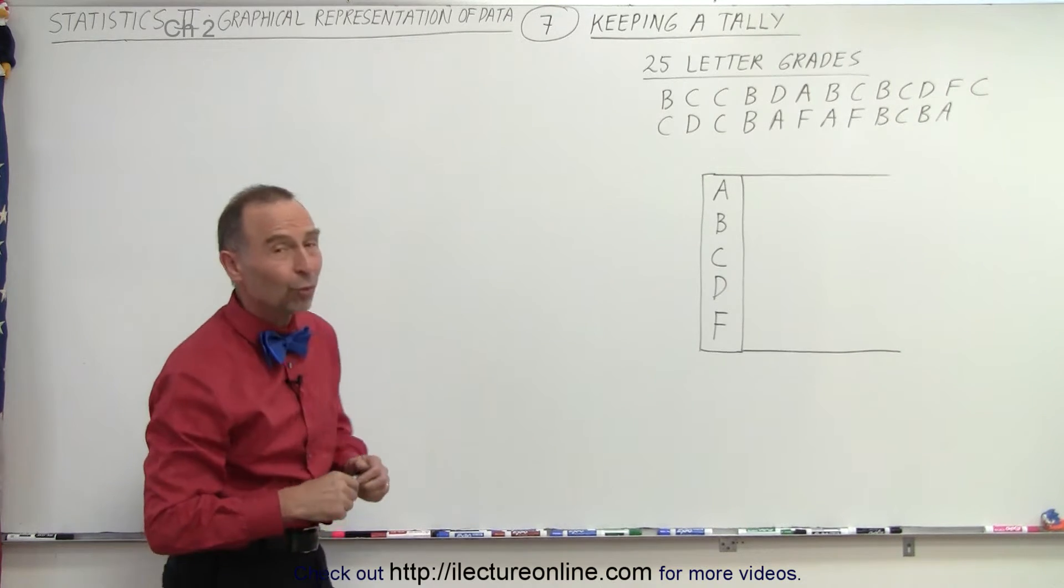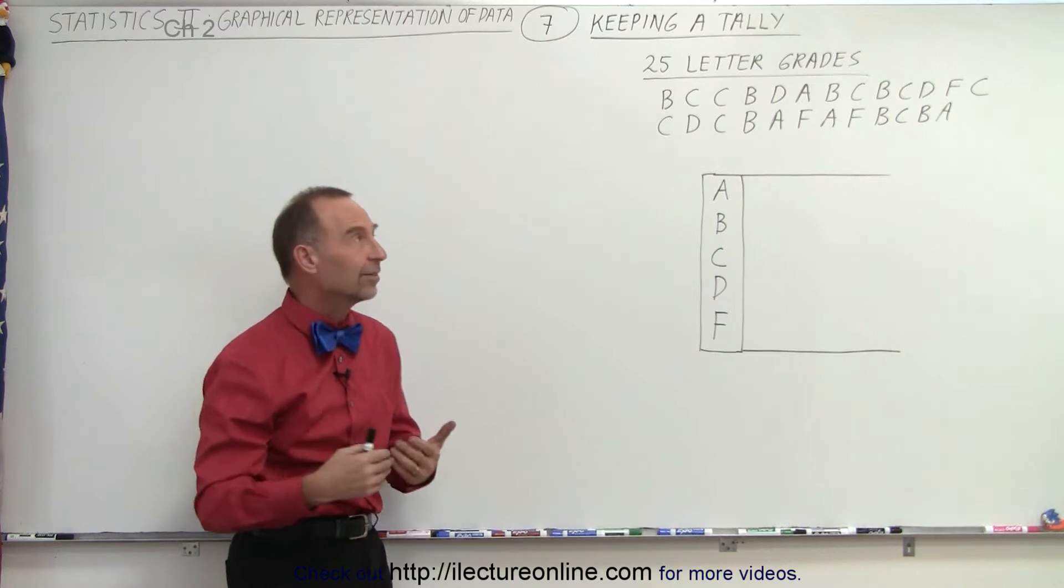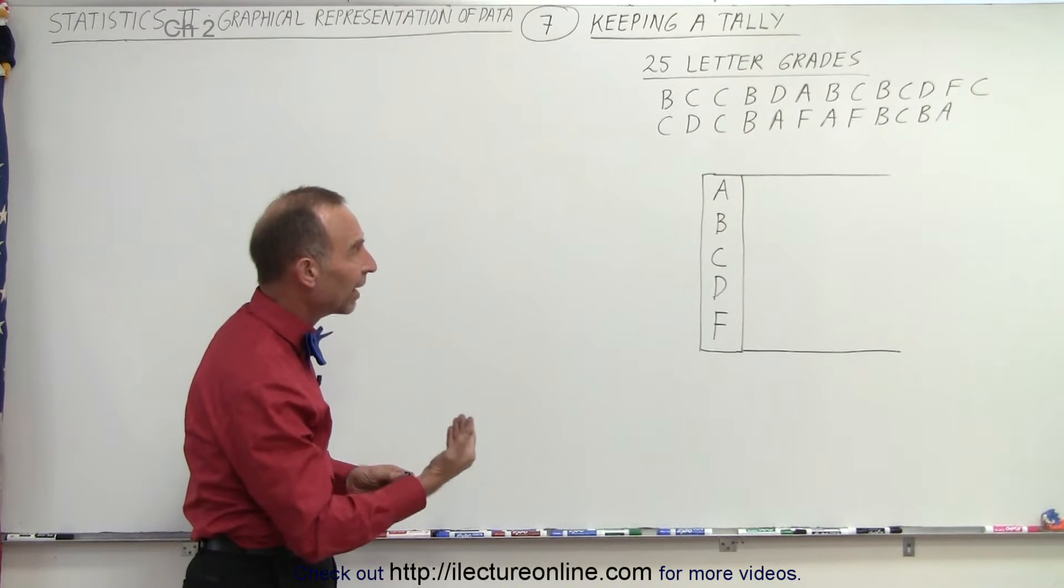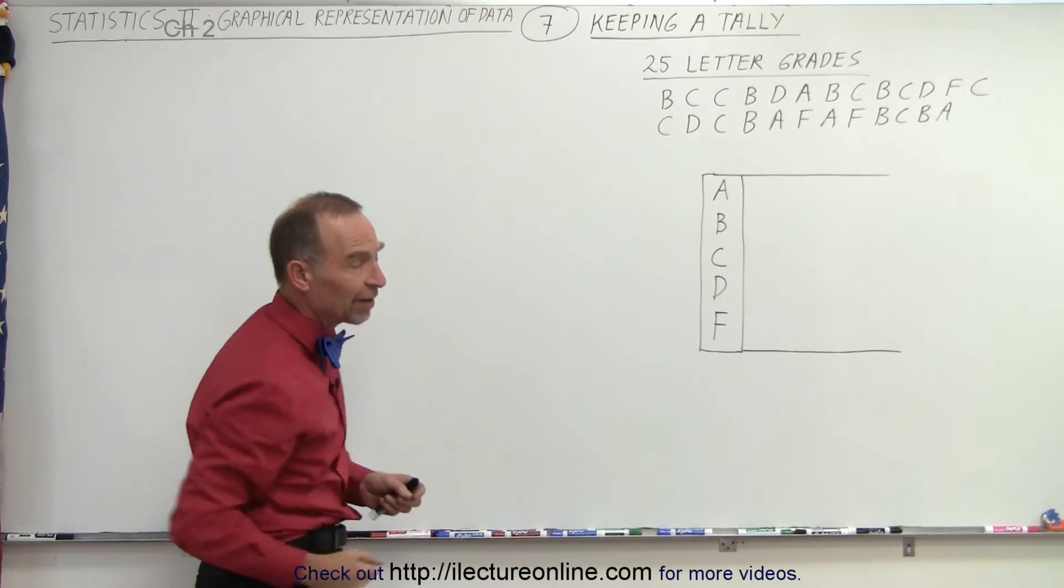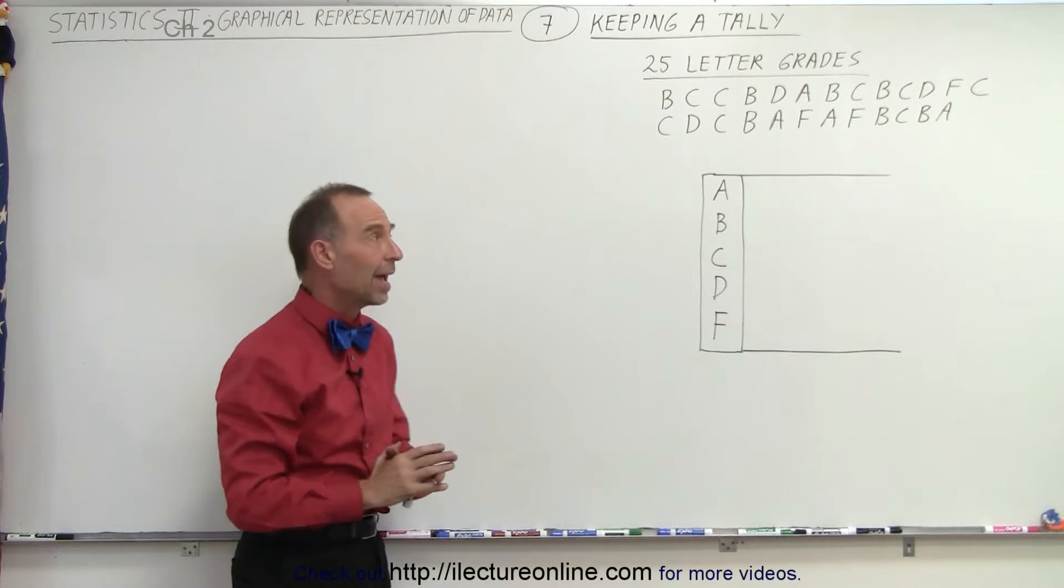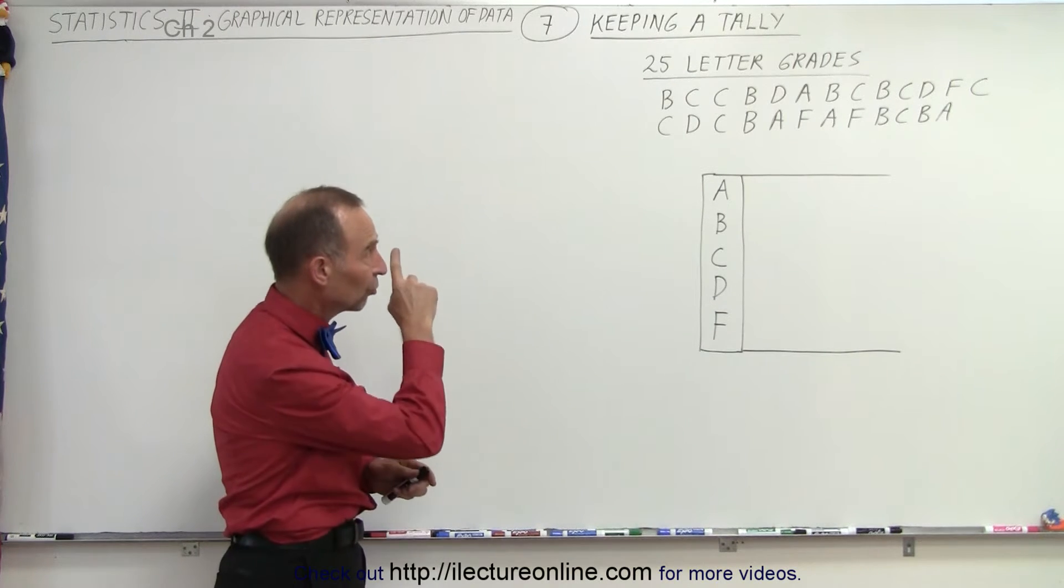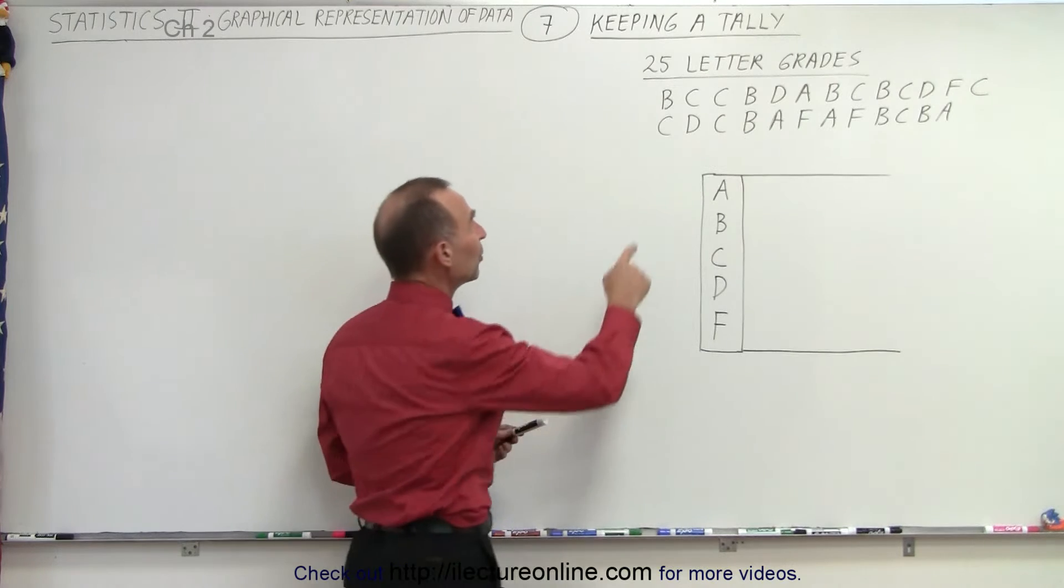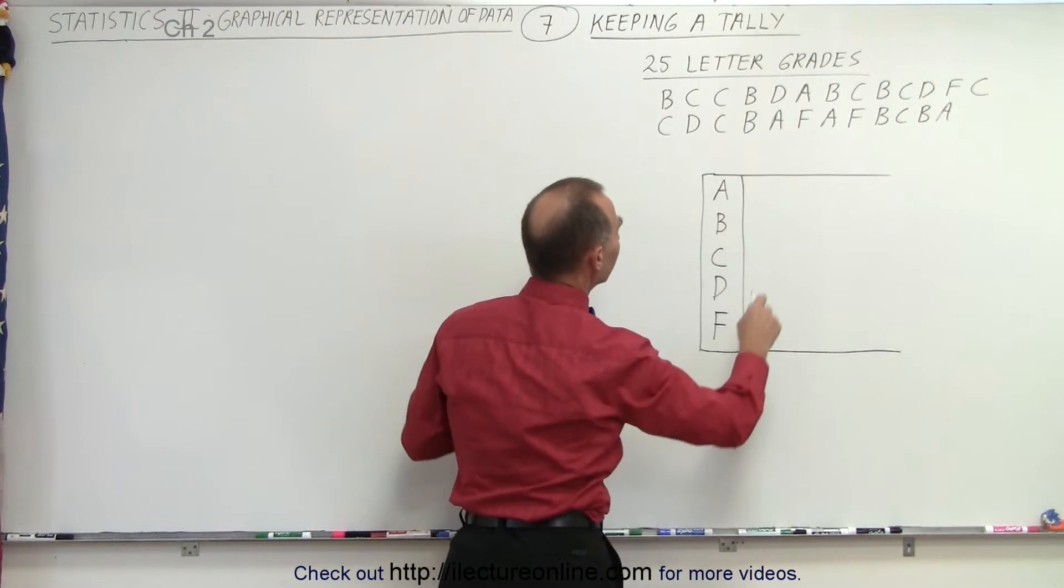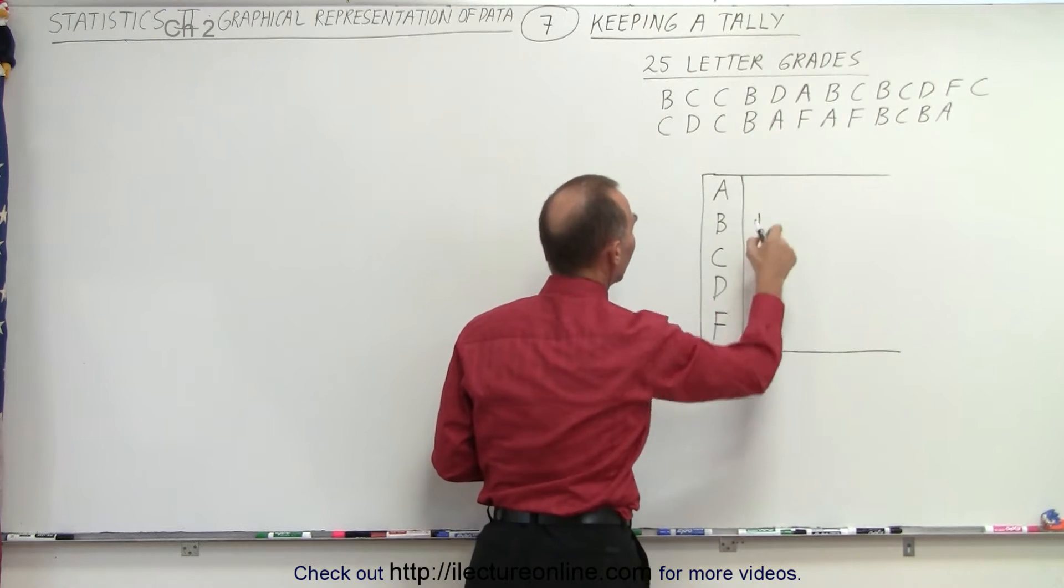Anyway, here's what that means, taking a tally or keeping a tally of something. So let's say we have 25 letter grades and want to know how much of each type I have. The way to do that is just to go down the line and whenever we see one of the letter grades we make a little line next to the grade that we found.